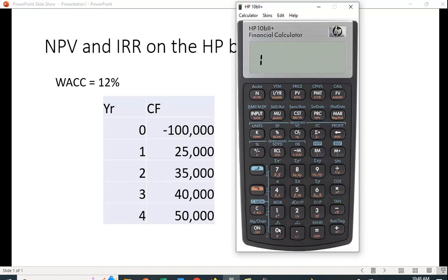Let's put the numbers in: 100,000. Then you want to change the sign. Up here is plus minus. You hit this and it tells you this is CF0 and there's your first value.